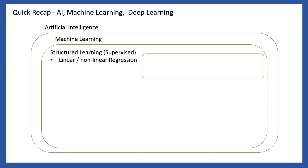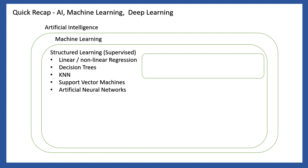Supervised learning algorithms include linear and non-linear regression, decision trees, k-nearest neighbors — a mathematical and statistical model — and support vector machines. These work with structured, labeled data.